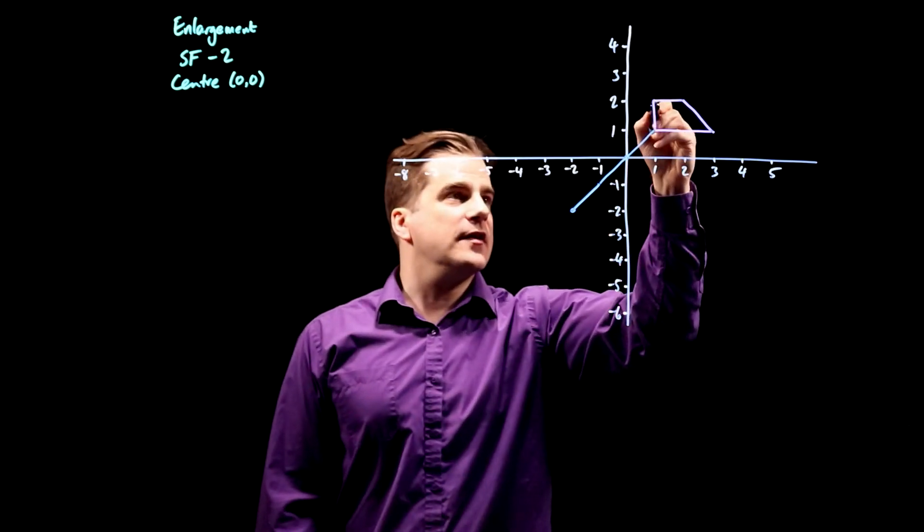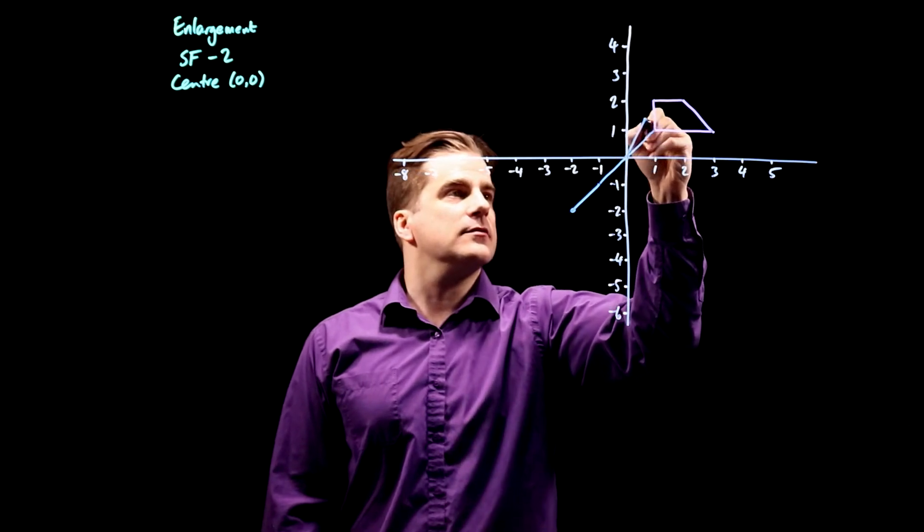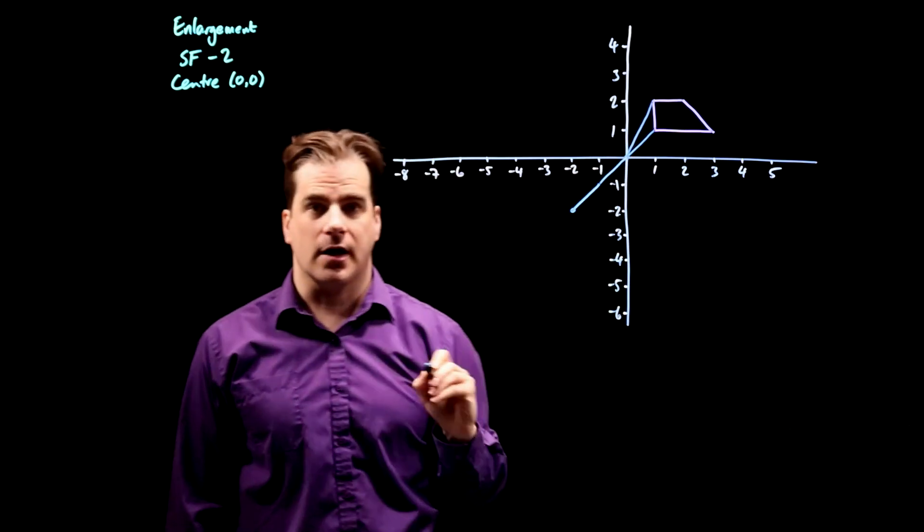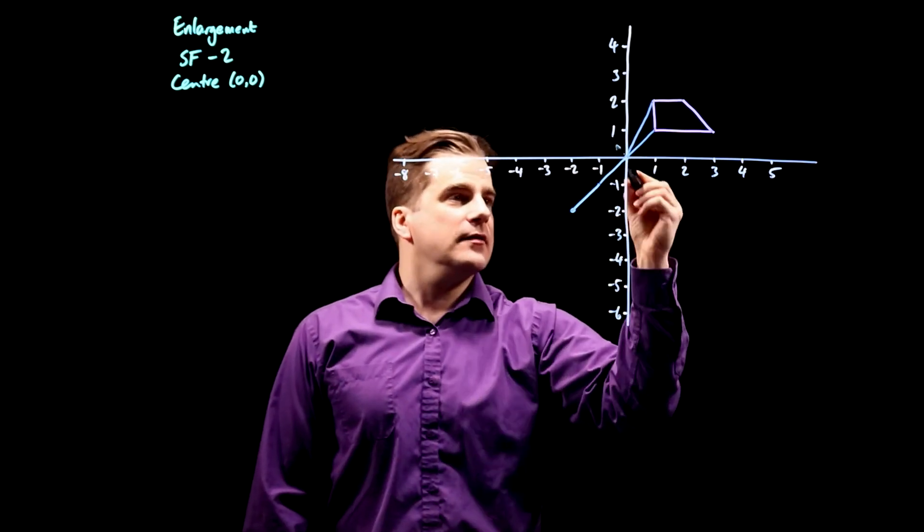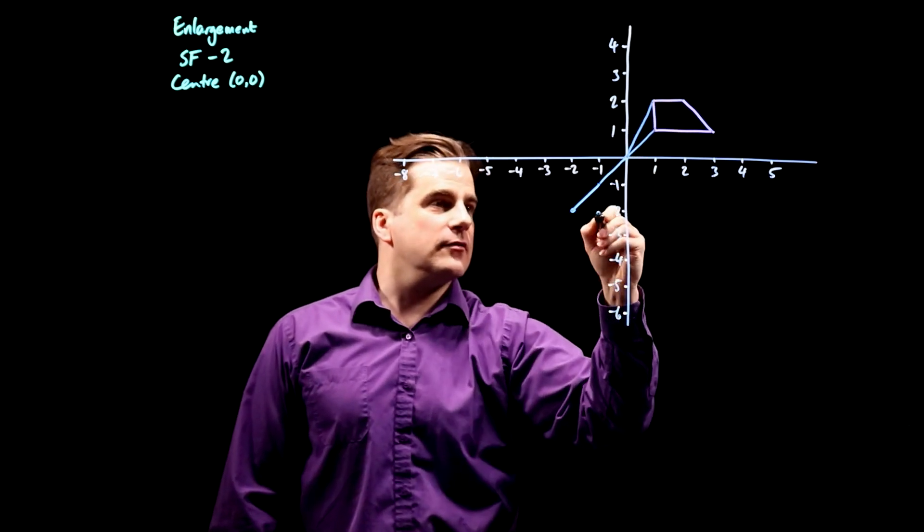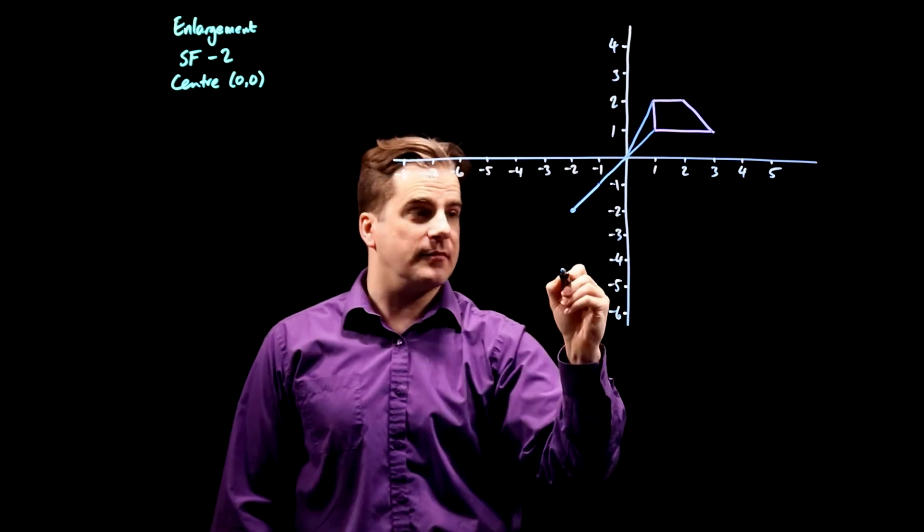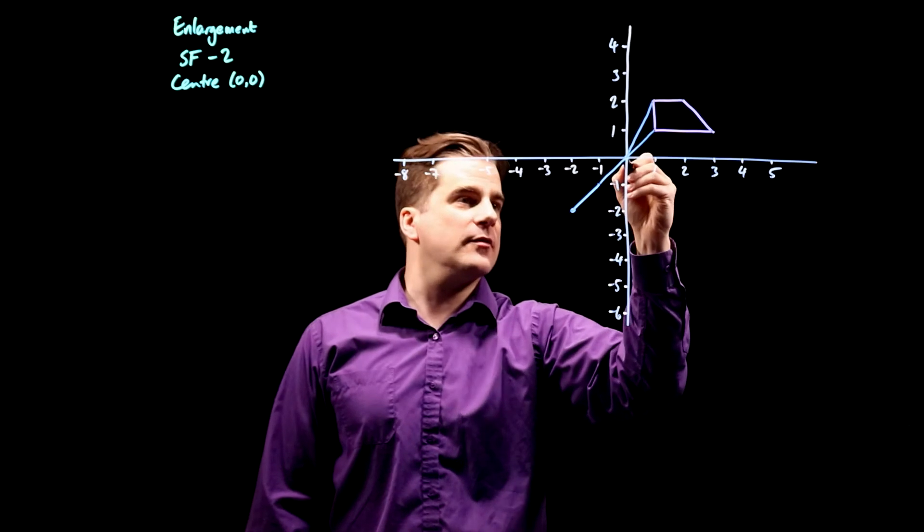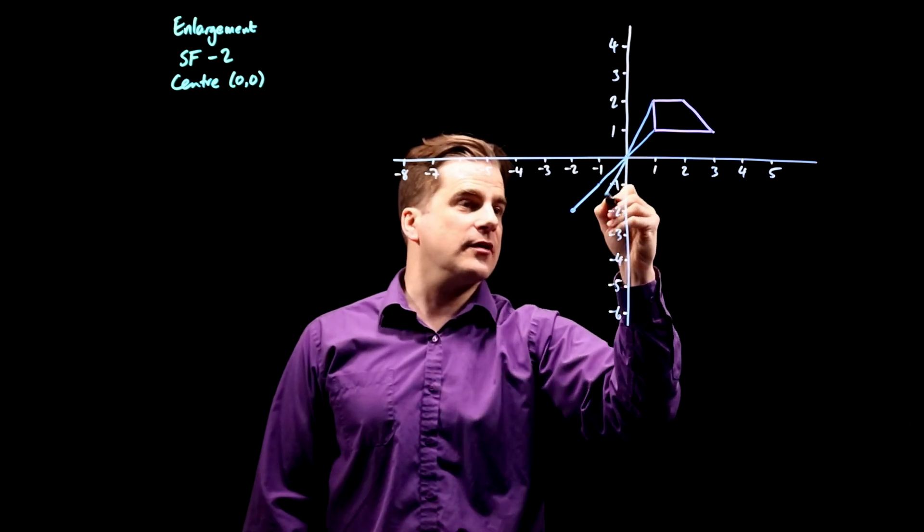Same with this point here. So let's draw a line to it from the center of enlargement. Now that line there, take it through the center of enlargement, the same distance, and then the same distance again, scale factor two. So it's one along and two up. So it's going to be one across and two down.